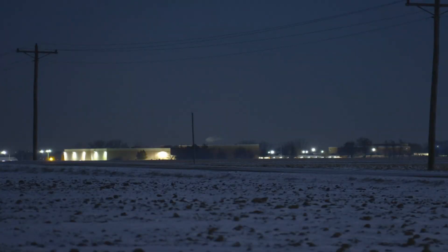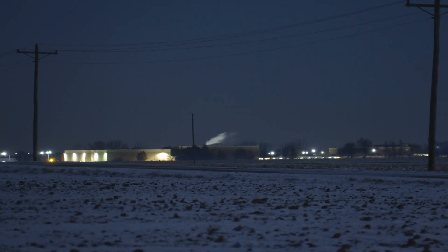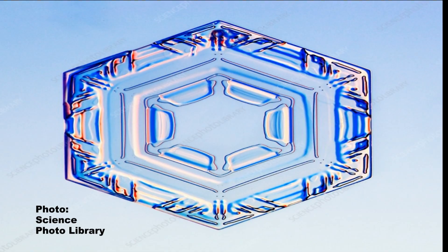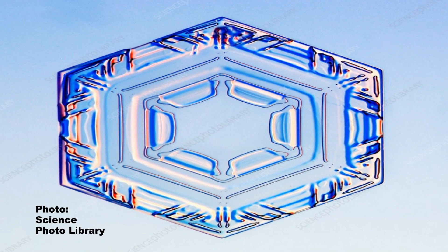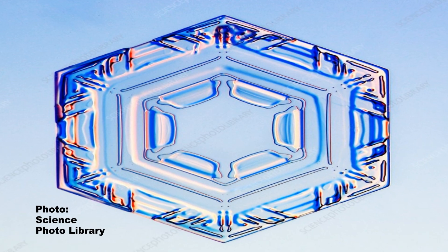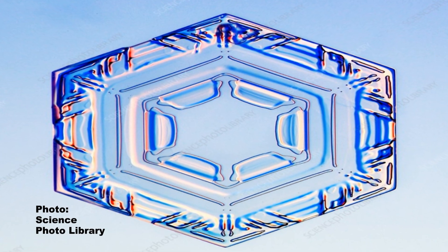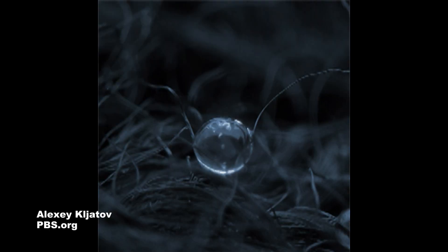Whether it's in the form of high level clouds such as cirrus clouds, or ice crystals suspended lower in the air — as you see sometimes in very cold wintertime conditions — the type of ice crystal most commonly associated with the light pillar phenomenon is called a hexagonal platelet.